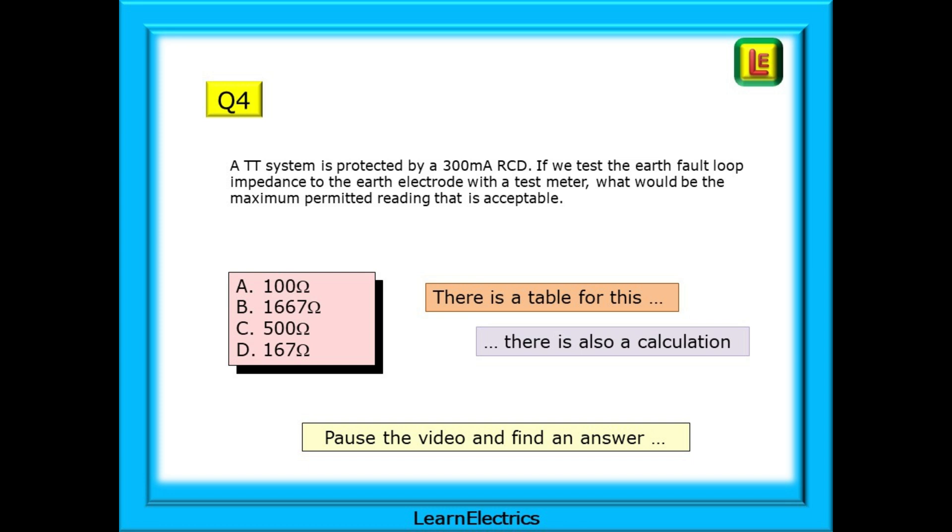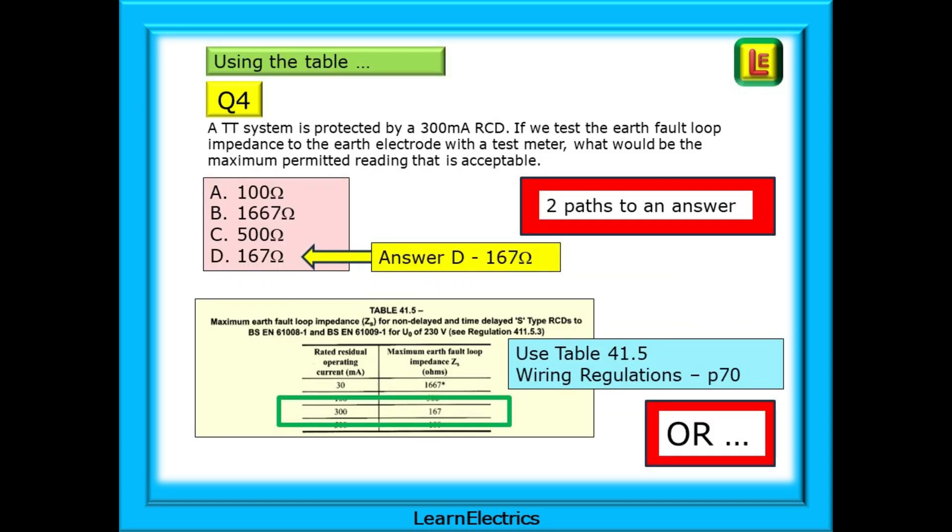Pause the video and find an answer. If we wish to use the table, go to page 70 of the Brown Wiring Regs book and find table 41.5. It's an easy task now to look at the table, find 300mA and read off the answer 167 ohms. We should choose answer D.